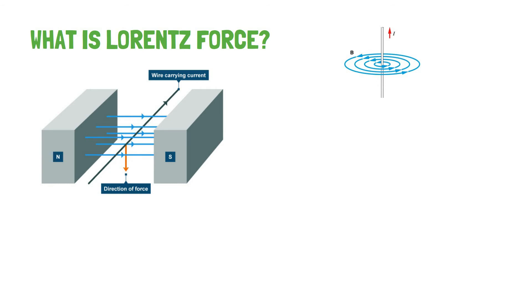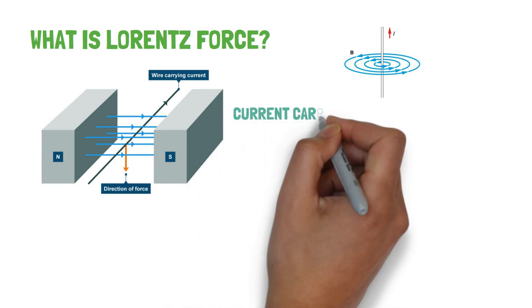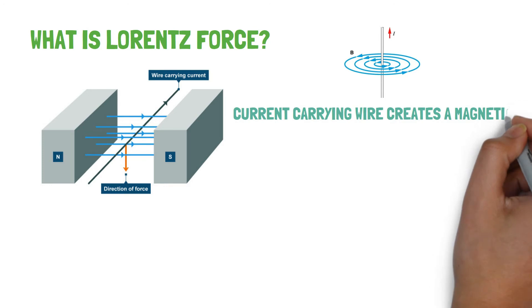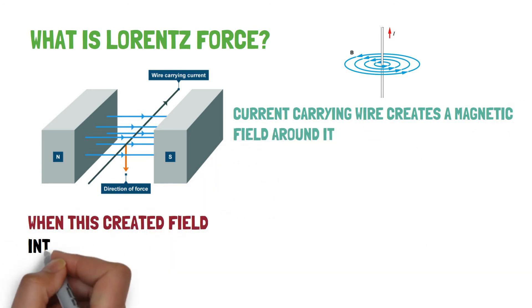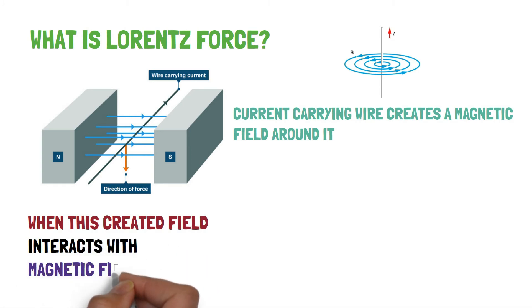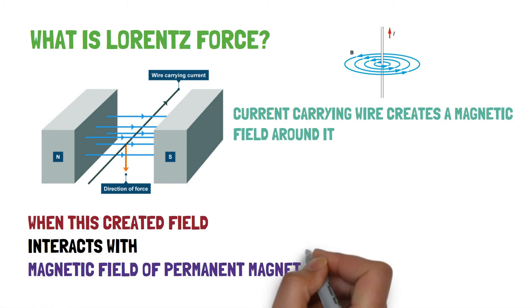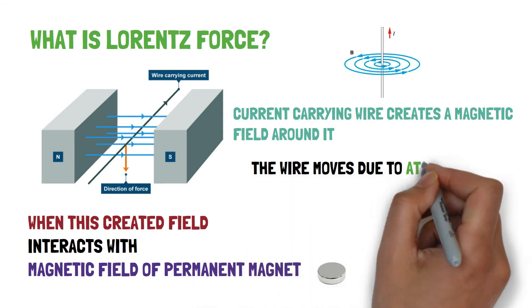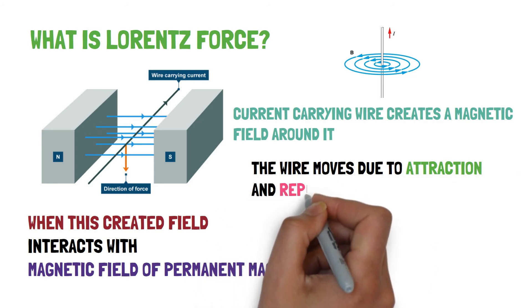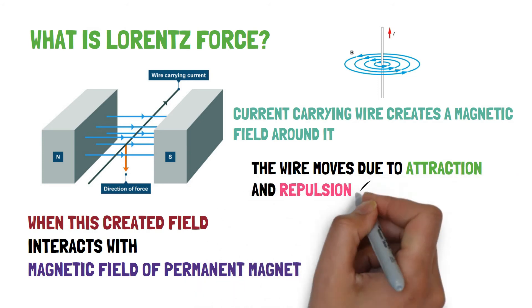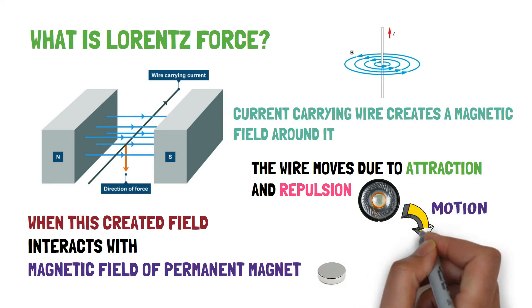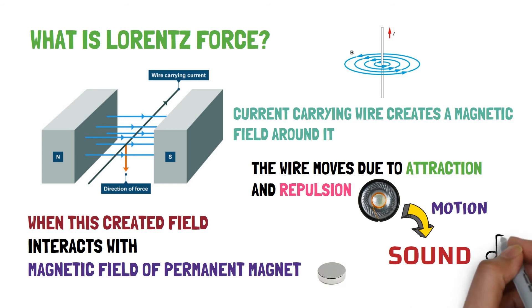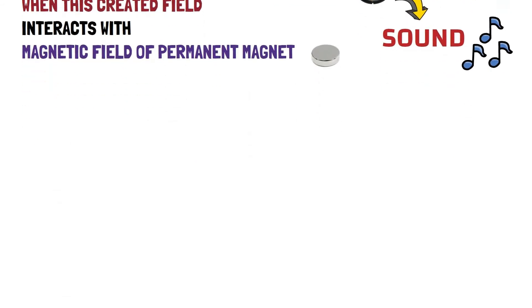What is the Lorentz force? A current-carrying wire produces a magnetic field around it and acts as an electromagnet. If we place a second magnet that produces fixed magnetism near this current-carrying wire, the wire moves due to attraction or repulsion under the influence of the permanent magnet's magnetic field. This phenomenon creates motion in the wire, and that motion results in the production of sound.